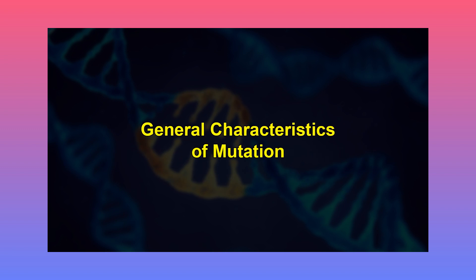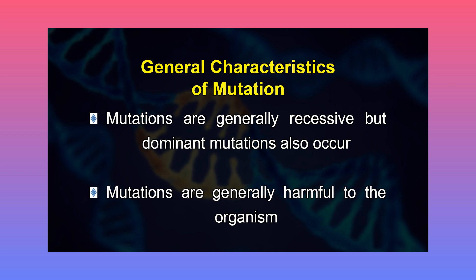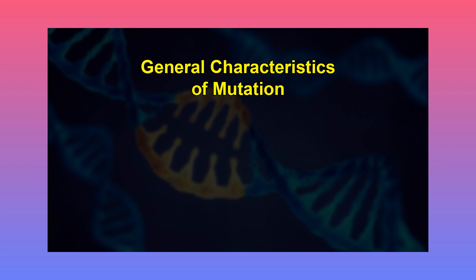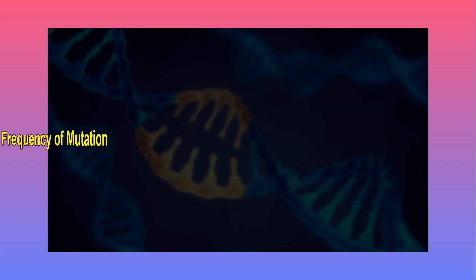Let's talk about the general characteristics of mutation. Mutations are generally recessive, but dominant mutations also occur. Mutations are generally harmful to the organism. Mutations are random and occur at any time and in any cell of an organism. If gene mutations are not lethal, the mutant individual may survive. Mutations are recurrent — the same mutation may occur again and again. Induced mutations commonly show pleiotropy, often due to mutations in closely linked genes.